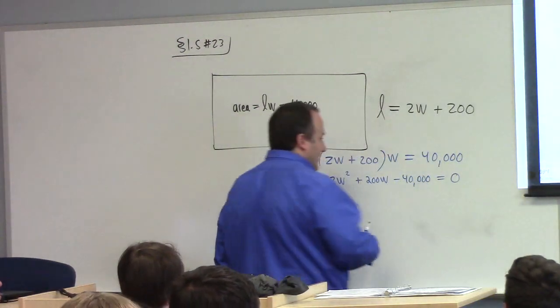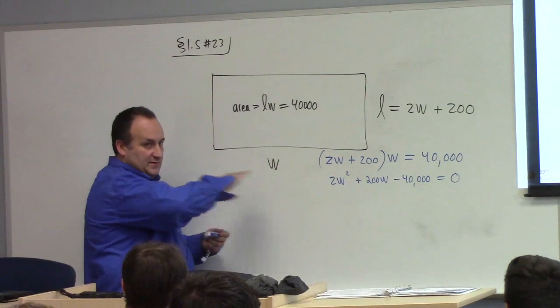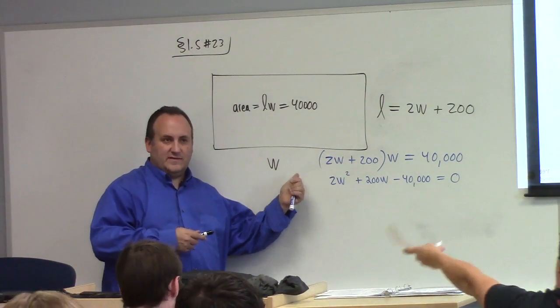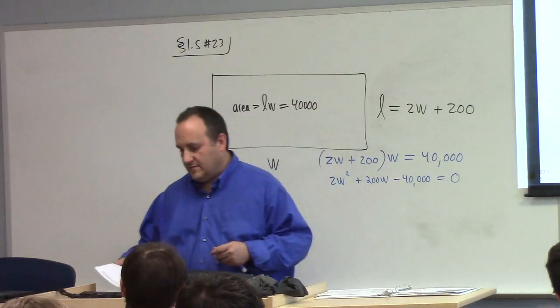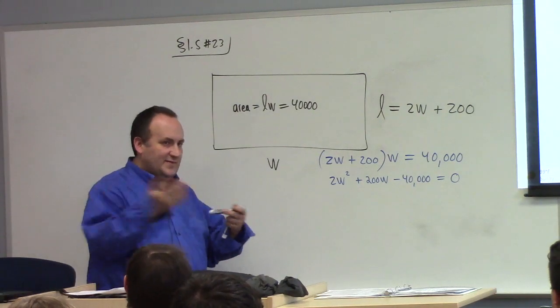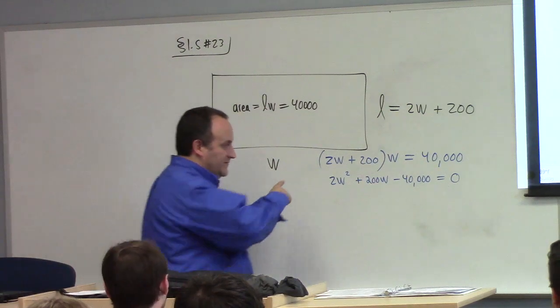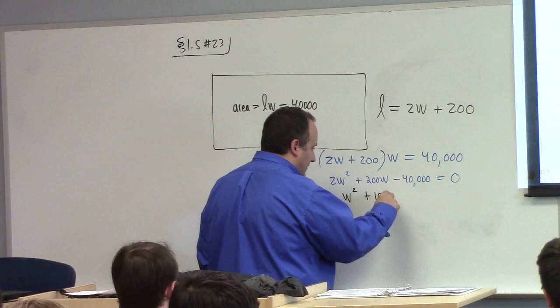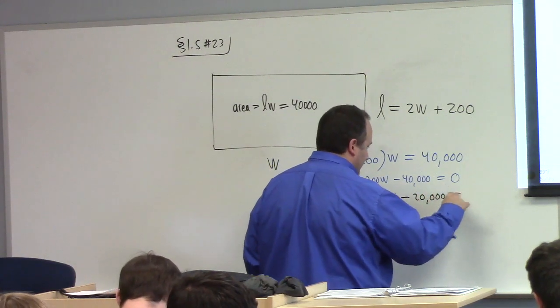Can we factor out the 2? I take your factor out 2 and raise you a divide by 2. Dividing by 2, which we can do here. Why? This is an equation, right? So I can divide by it. Our context last class was factoring. There we can't just divide by a number and get rid of it. But here we can. So divide by 2, we get w squared plus 100w minus 20,000 equals zero.